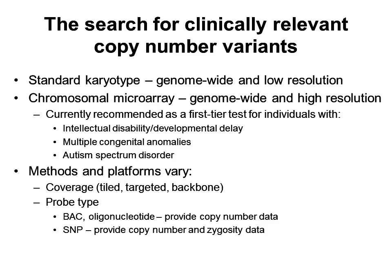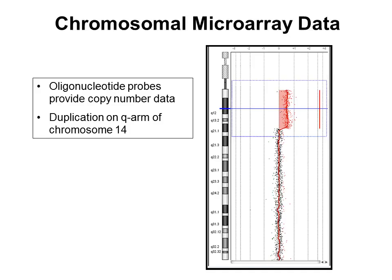BAC and oligonucleotide probes can provide data regarding copy number, so gain or loss, and single nucleotide polymorphism, or SNP probes, can provide data regarding both copy number and zygosity, or the presence or absence of heterozygosity at a given locus. I'm not going to go into detail about the various microarray platforms that are available, or the software used to analyze the data, but I'll give just a brief description of what a deletion and a duplication found by microarray look like for those of you who are visually oriented.